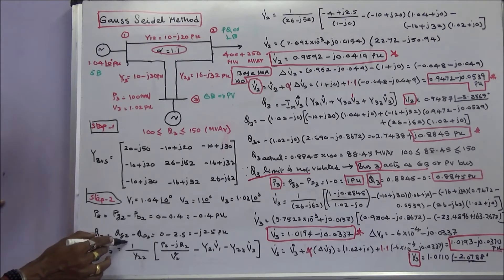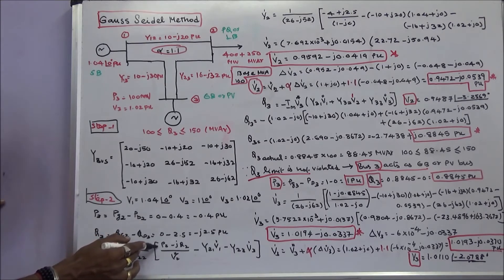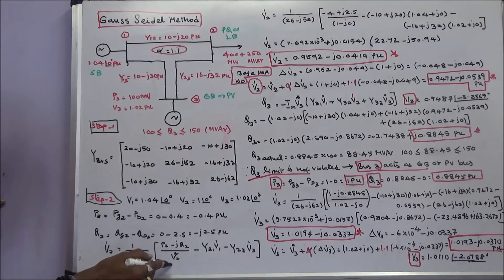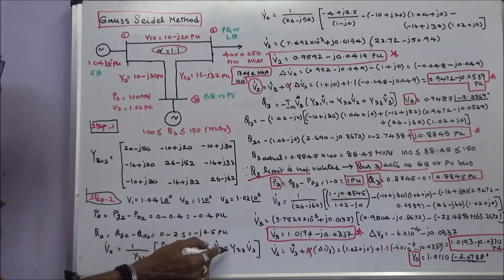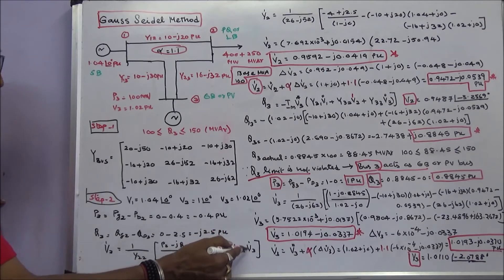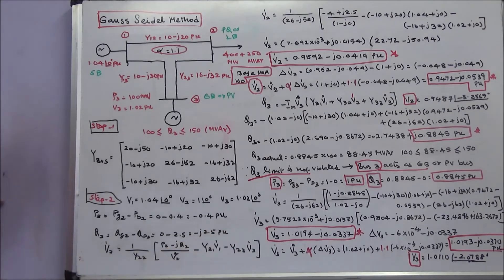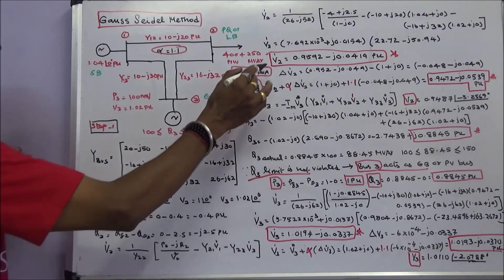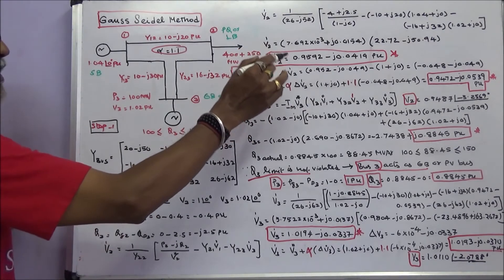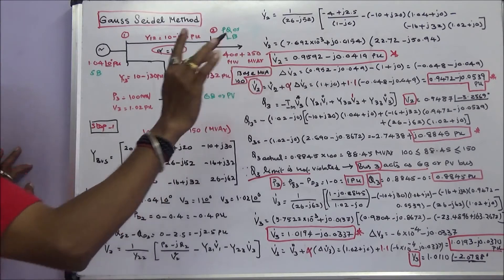Next we calculate the first iteration V2 value. The formula is: V2 = (1/Y22) × [(P2 − jQ2)/V2* − Y21·V1 − Y23·V3], substituting the initial values. The first iteration V2 value is 0.9592 − j0.0419 per unit.